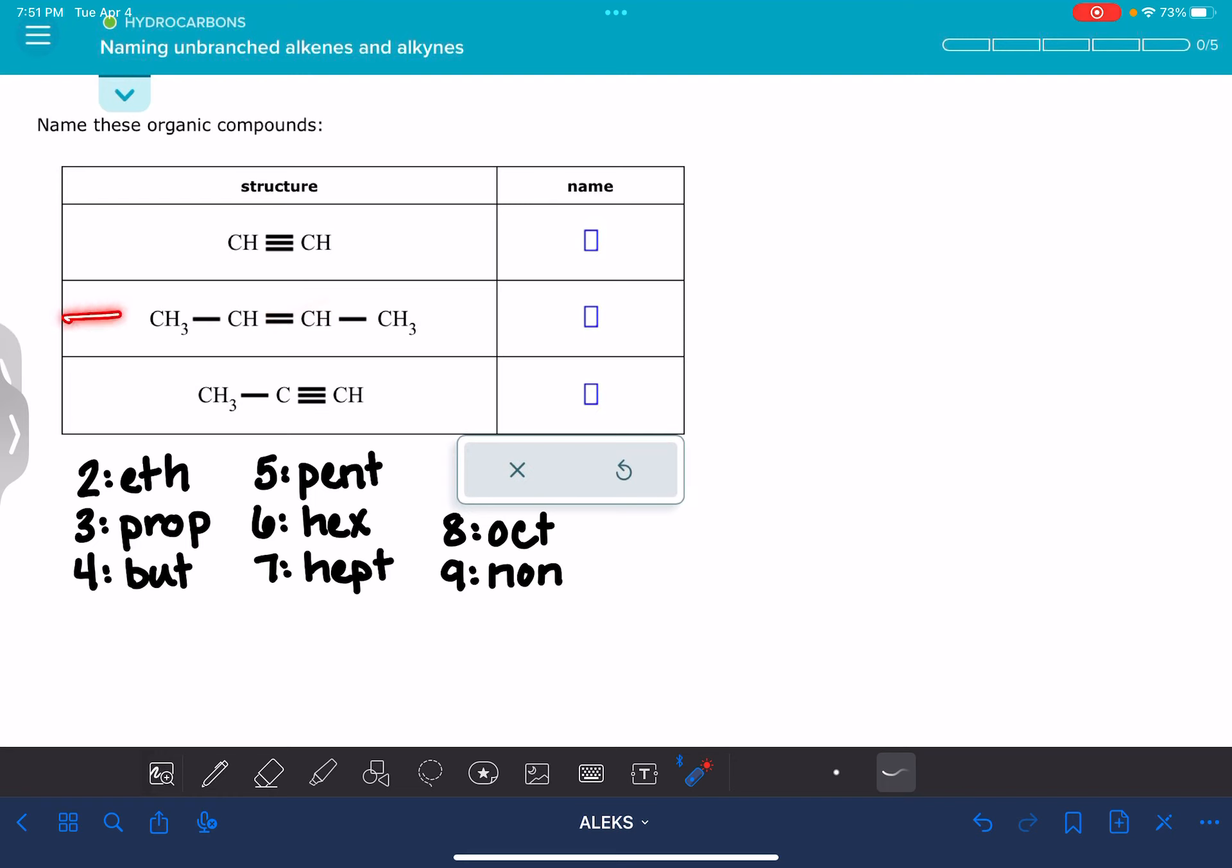We're actually going to start with this molecule first to name it. It's the easiest one of the three. The first step in the process is for us to figure out how many carbon atoms we have in our carbon chain. This molecule has four carbon atoms, and four carbon atoms is indicated with the prefix but.